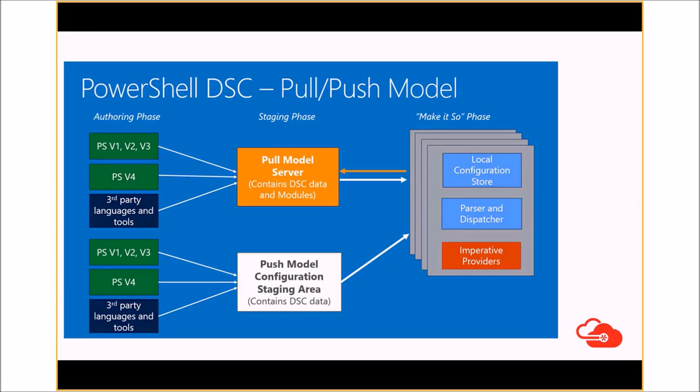The second model is the pull model — a client-server model. We create our configurations in the authoring phase, and once we have our configuration, we push it to the pull server. The pull server contains all the data and modules needed — the modules containing the DSC resources — and it starts interacting with the servers onboarded on that pull server model. This is basically what OMS Azure Automation Desired State Configuration is all about.